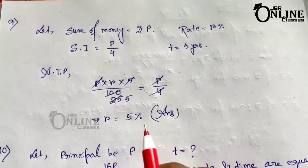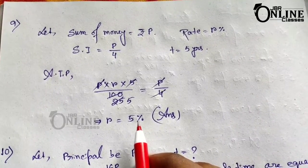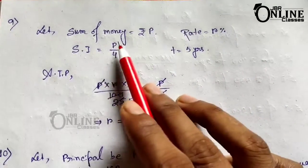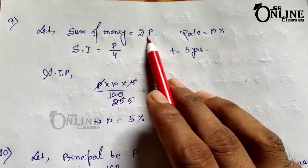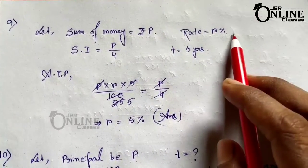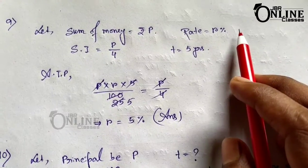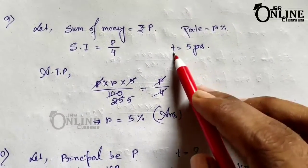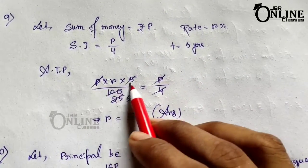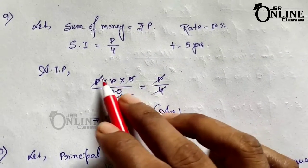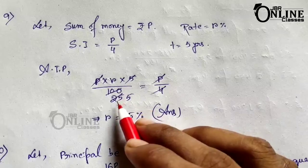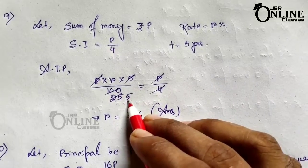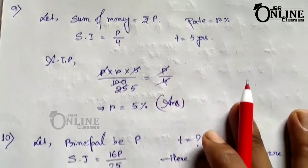Sum number 9: The simple interest on a sum for 5 years is one fourth of the sum. Find the rate of interest per annum. Let principal be P. So SI equals P/4. Time equals 5 years. Using PRT by 100 equals SI: P into R into 5 by 100 equals P/4. P cancels out. 5R/100 equals 1/4, so 4 cancels with 100 to give 25, then 5/25 gives R equals 5%.